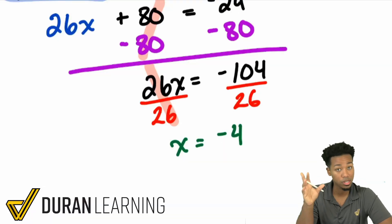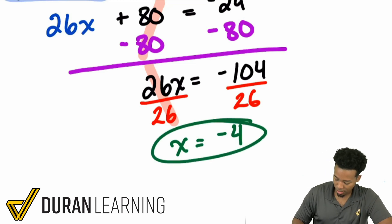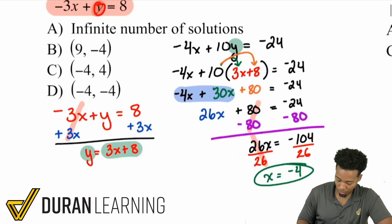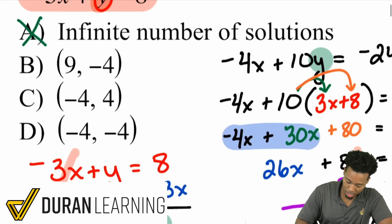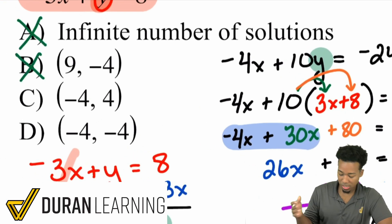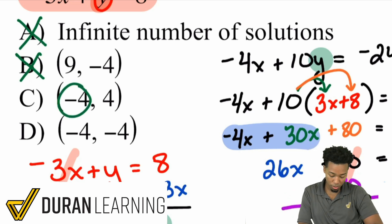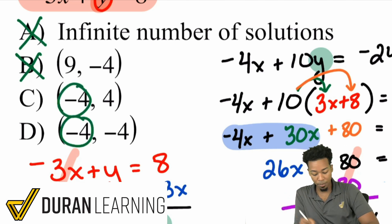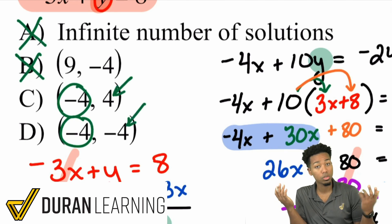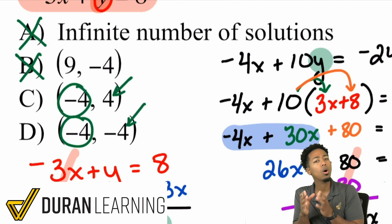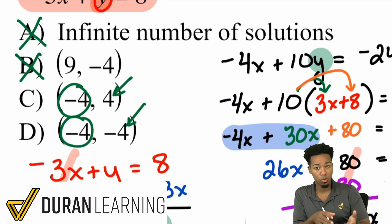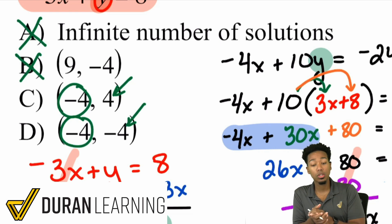104 divided by 26 is 4, and since it's a negative divided by a positive, that stays negative. So we have X equals negative 4. When we look at our answer choices, it's not A or B — it's C or D, since both have negative 4 as X. We need to determine the Y value: is it positive 4 or negative 4? So we keep going.